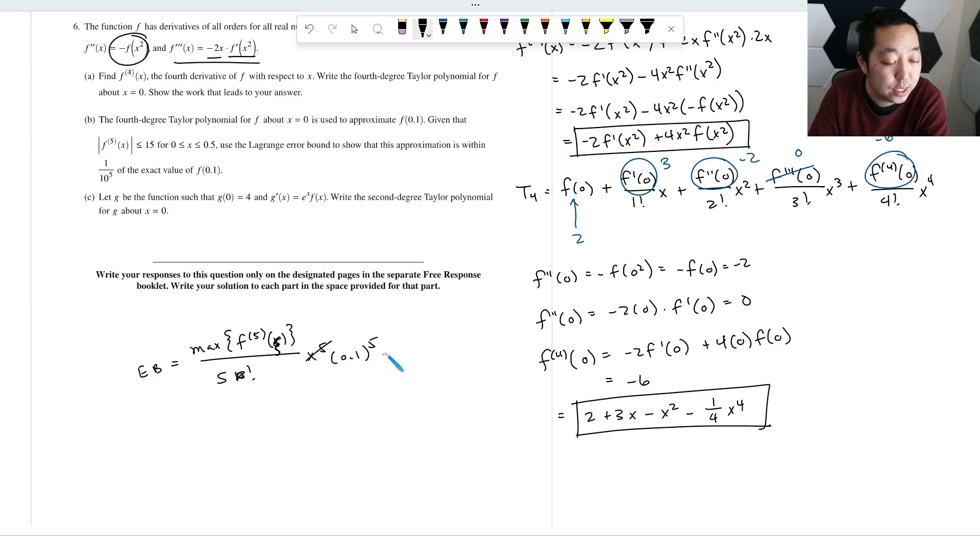We make that n factorial 5 factorial. Instead of x to the 5th, it's going to be 0.1 to the 5th because that's our approximation. So that's 1/10 to the 5th. So now the maximum, they tell you, this is telling you that the maximum is 15, and that includes the interval from 0 to 0.1.